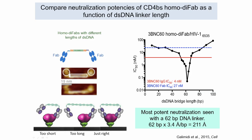Here's one example: the potency of a CD4 binding site Fab from the broadly neutralizing antibody 3BNC60, isolated by Johannes Scheid and Michel Nussenzweig's lab, made into one of these constructs. We varied the length of the double-stranded DNA bridge and measured IC50 in separate in vitro neutralization assays. At the optimal length, we see over two orders of magnitude decrease in IC50, meaning a dramatic increase in potency — and that's against one viral strain.